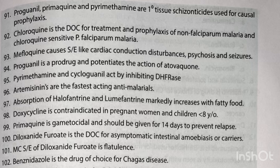Proguanil is a prodrug and potentiates the action of atovaquone. Pyrimethamine and cycloguanil act by inhibiting DHFR. Artemisinins are the fastest acting anti-malarials. Absorption of halofantrine and lumefantrine markedly increases with fatty food. Doxycycline is contraindicated in pregnant women and children less than 8 years of age. Primaquine is gametocidal and should be given for 14 days to prevent relapse.